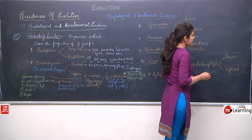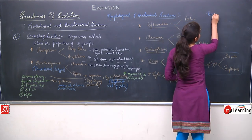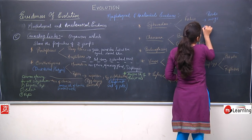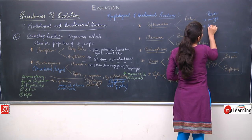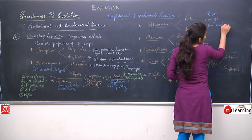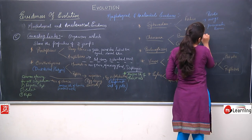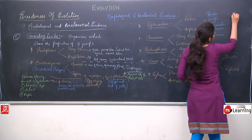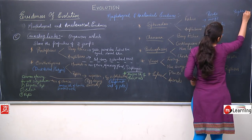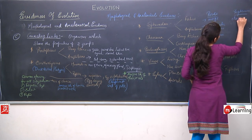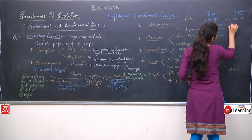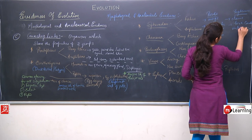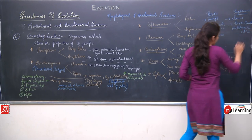Archaeopteryx is the connecting link between birds and reptiles. It has certain bird characters like the presence of wings, presence of pneumatic bones, and feathers. It also has reptilian features like presence of claws and free caudal vertebrae.